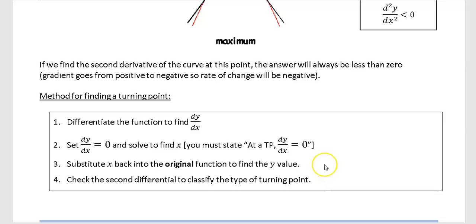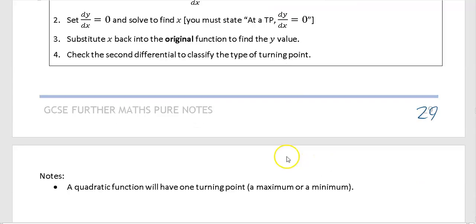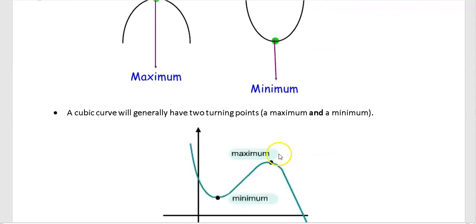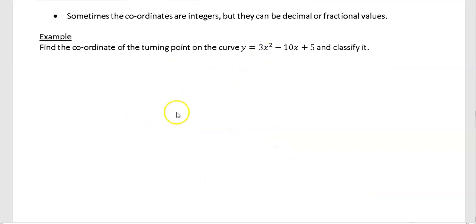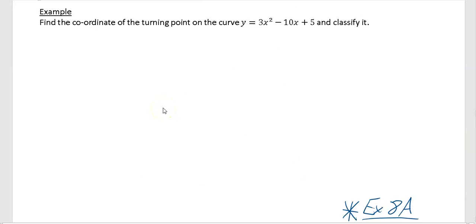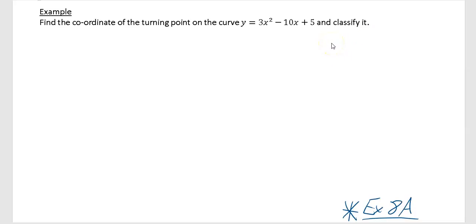We'll look at an example now. Find the coordinates of the turning point of the curve y = 3x² − 10x + 5 and classify it. If you hear the words tangent, normal, gradient, maximum, minimum, stationary point, or turning point, you should be thinking about differentiating — finding dy/dx.